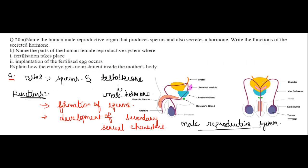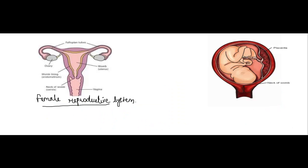For the first question — fertilization takes place. So basically, in the female reproductive system, the fertilization takes place in the fallopian tubes, also called the oviduct.